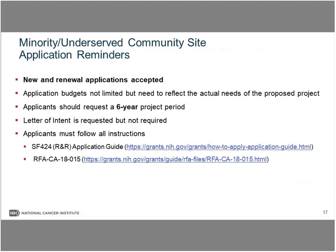A few reminders for those who may apply: we are accepting new and renewal applications. There is no cap on the budget; however, what you request must reflect what you actually need to conduct the proposed work. This is a six-year project period — not five years as in the past — and you must provide a budget incorporating all six years. We are asking for a letter of intent, which helps us plan for scientific review, but it is not required.